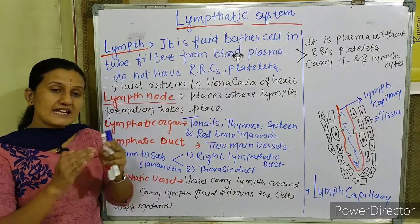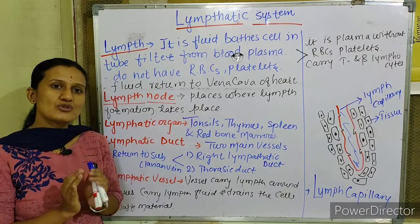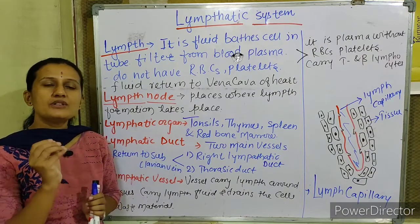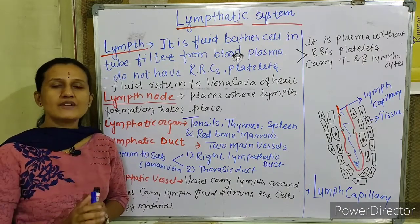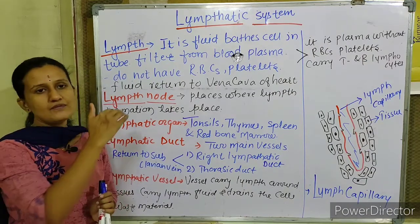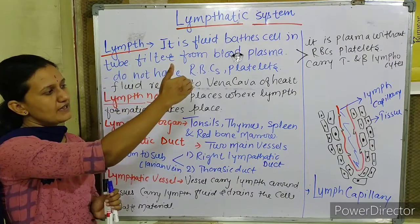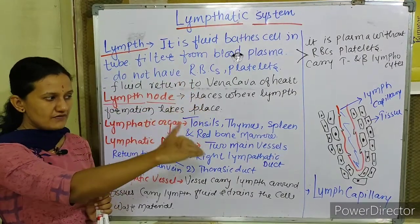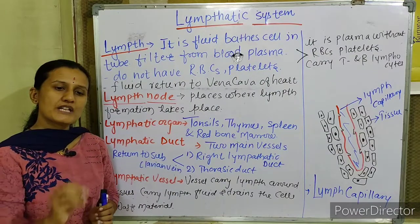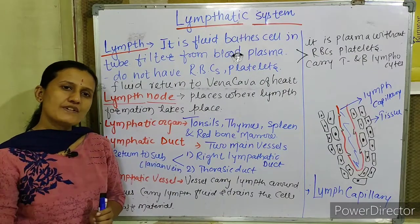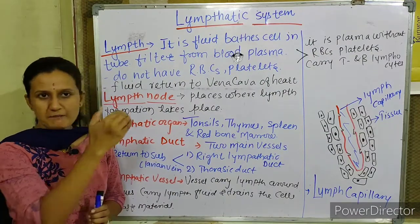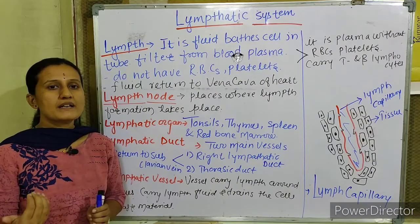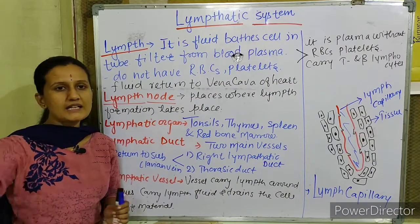Lymph nodes are where the lymph fluid gets formed. The lymph fluid forms within the lymphatic vessels, lymphatic ducts, and lymphatic capillaries. These small vessels convert into larger lymphatic organs, through which the lymph fluid passes.